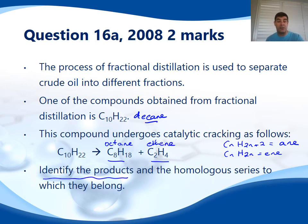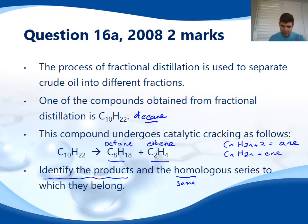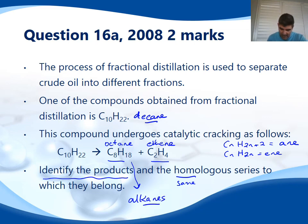As for the homologous series, the homologous series is simply the group to which they belong. So octane belongs to the alkanes, and ethene belongs to the alkenes.